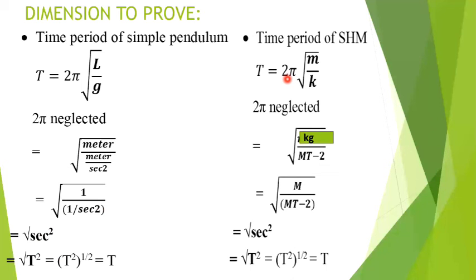Similarly, for the time period of simple harmonic motion, the formula is 2π√(m/k). Since 2π is a number, we neglect it. Mass has unit kg with symbol M. k has dimension MGT⁻² (spring constant), and M from M cancels. The power gives T squared, T squared cancels from both sides, and we get T, proving left-hand side equals right-hand side.